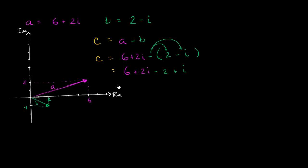And now this is going to be equal to, we can add the real parts right over here. We have six minus two, and so that's going to be four. And then we can add the two i to the i, which is going to be three i's. So four plus three i. And that is the complex number C.